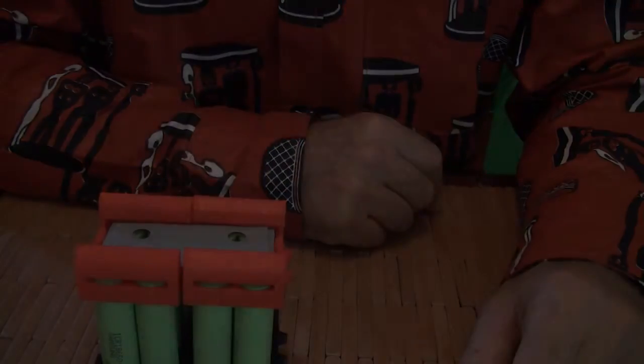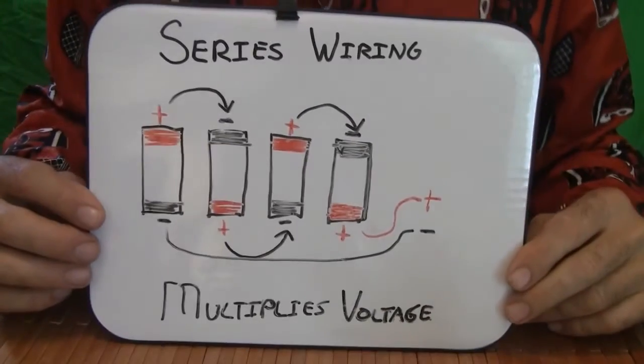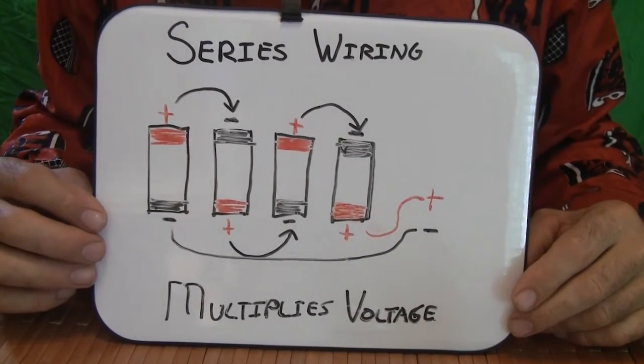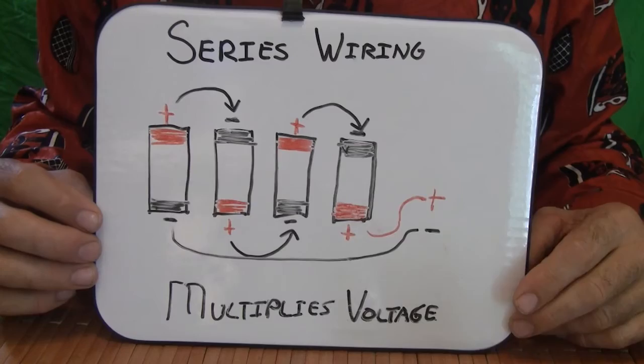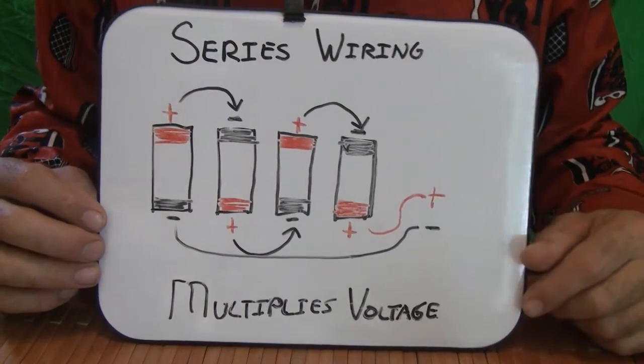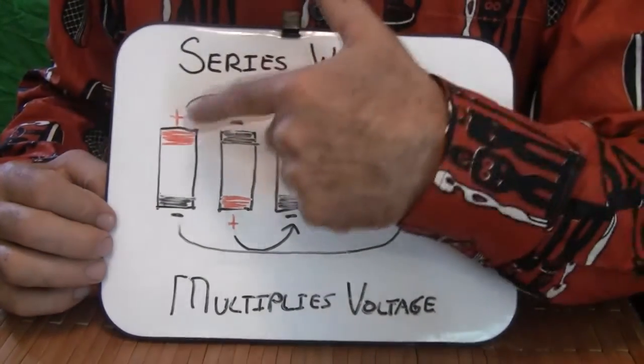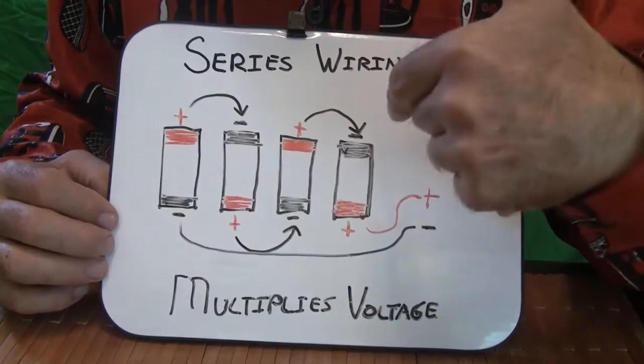Okay, let's go on to series wiring. Series wiring multiplies voltage. In series wiring, you take those same cells, and you connect them, the positives to the negatives, and the negatives to the positives.